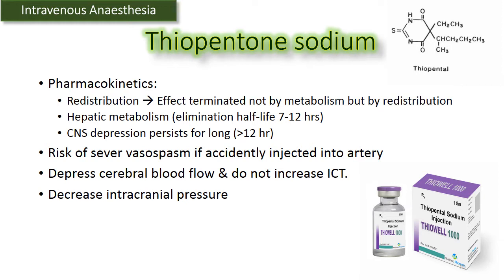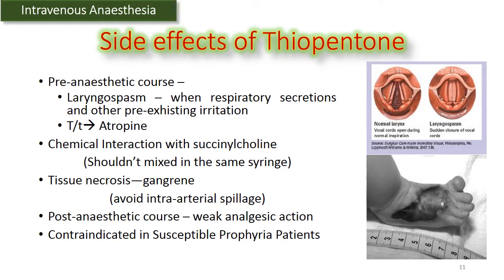There is risk of venous spasm if accidentally injected into an artery. It causes depressed cerebral blood flow and decreases intracranial pressure rather than increasing it. Thiopental sodium can cause laryngospasm in pre-anesthetic course when respiratory secretions and other irritations are present — treated by atropine. There is chemical interaction between succinylcholine and thiopental sodium, so they should not be mixed in the same syringe. There are chances of local tissue necrosis and gangrene, so avoid intra-arterial spillage. It should be supplemented with another analgesic agent in the post-anesthetic course. It can precipitate acute intermittent porphyria in susceptible individuals and is contraindicated in such patients.